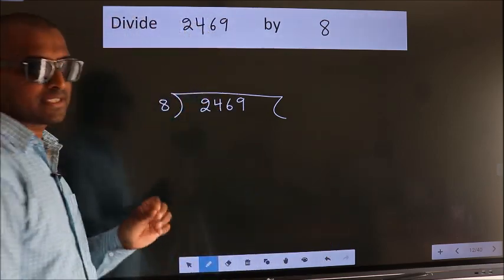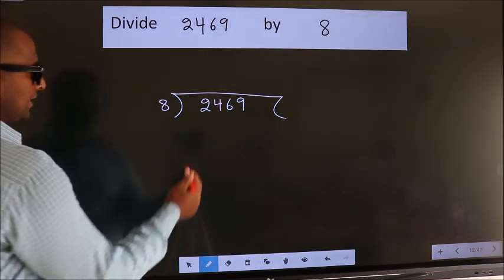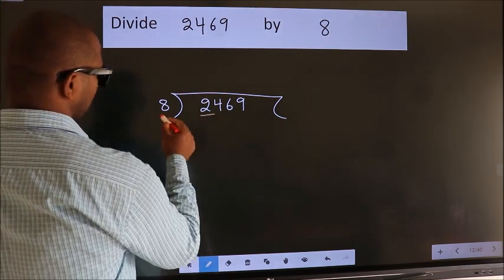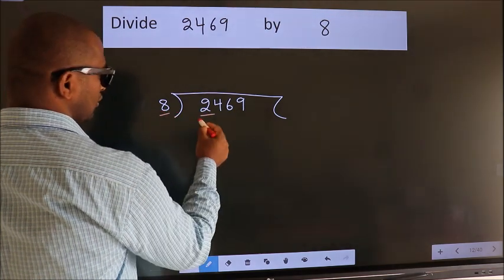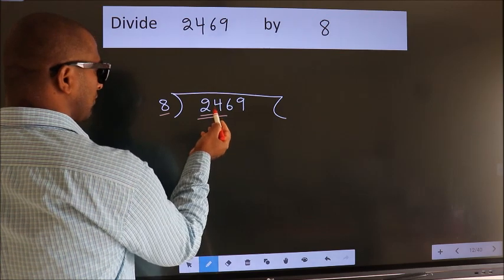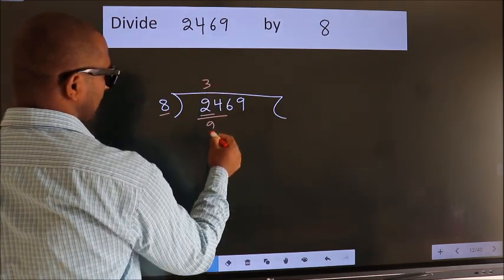This is your step 1. Next, here we have 2. Here 8. 2 is smaller than 8. So, we should take two numbers, 24. When do we get 24 in 8 table? 8 threes, 24.